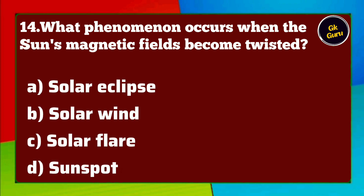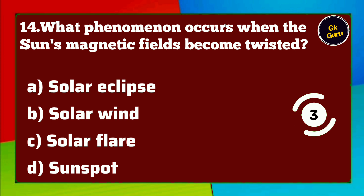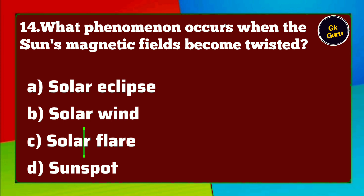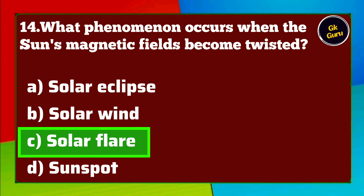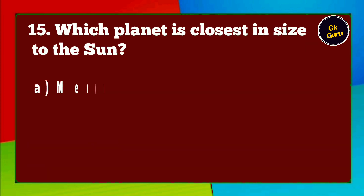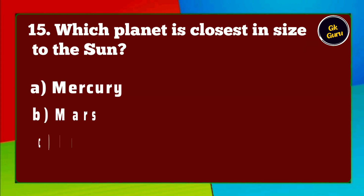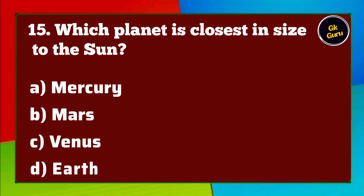What phenomenon occurs when the sun's magnetic fields become twisted? A. Solar eclipse B. Solar wind C. Solar flare D. Sunspot. Answer C. Solar flare.